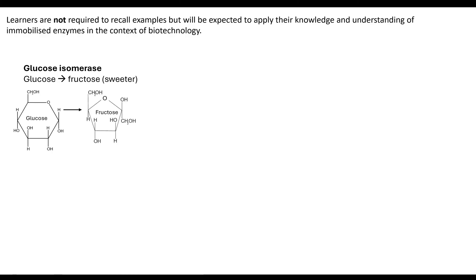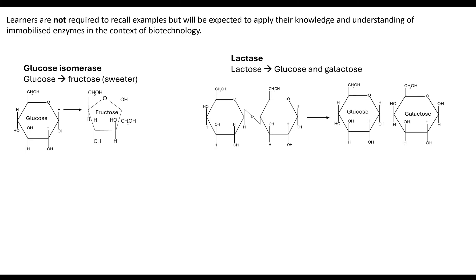There are specific examples named in the specification, but you are not required to recall them — you will be expected to apply your knowledge and understanding. Go back to Module 2. Glucose isomerase is an enzyme that converts glucose into fructose. Lactase is an enzyme that converts lactose into glucose and galactose — this is Module 2 knowledge about enzymes and saccharides and how we can break them down. There's also glycoamylase, which takes starch and converts it into a glucose syrup — for example, dextrins to glucose.